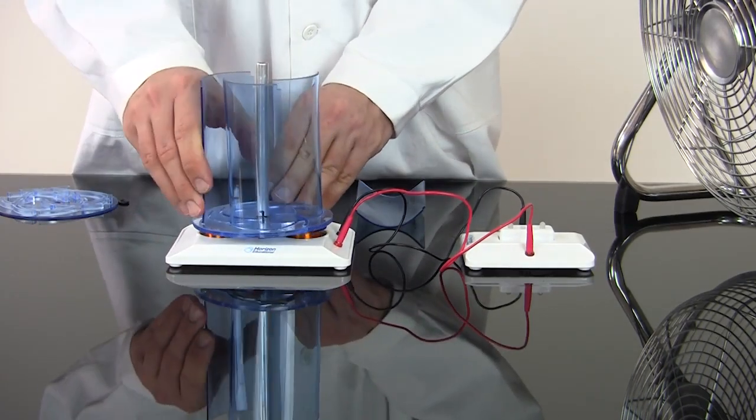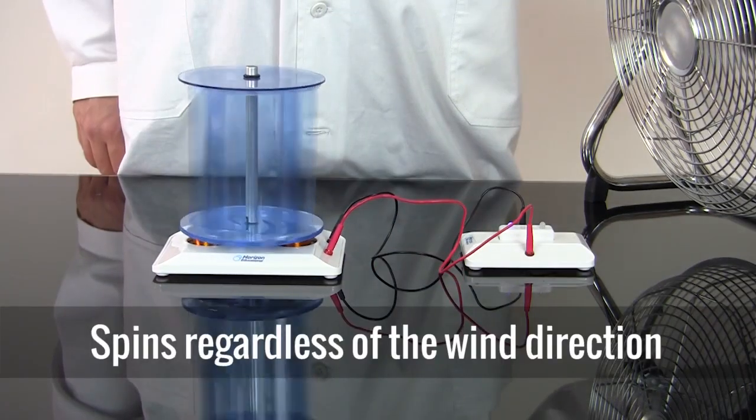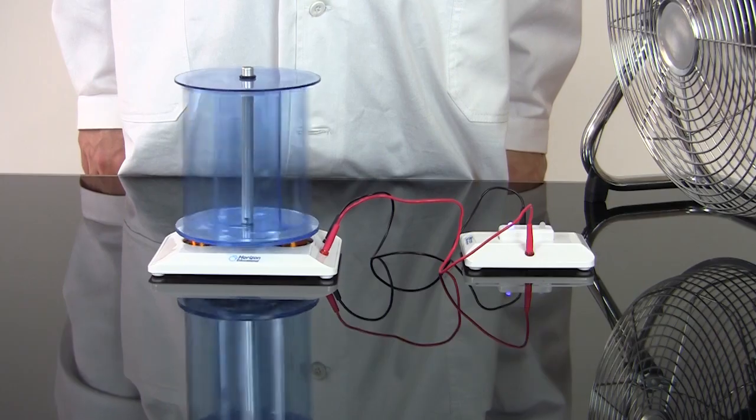And unlike horizontal axis turbines, the Vertical Axis Wind Turbine will spin no matter what direction the wind comes from.